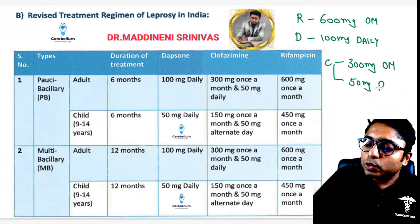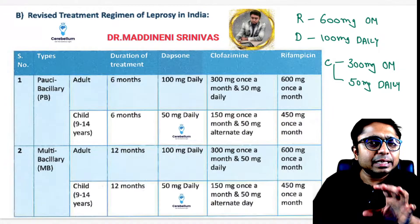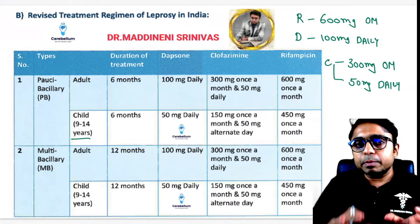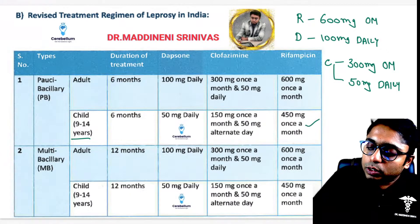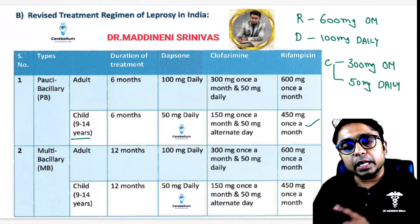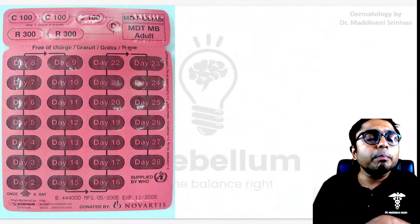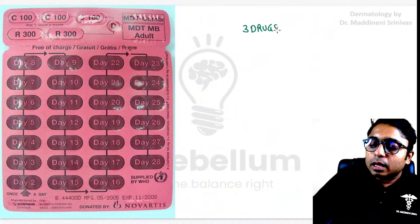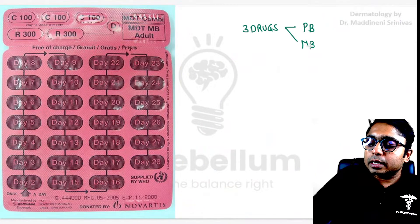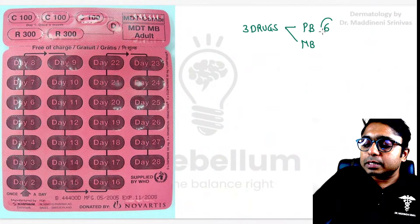That dosing is for adults. In children aged 9 to 14 years, remember half of the adult doses, except for Rifampicin where the dose is 450 mg once a month. This treatment regimen comes in a maroon-colored packet containing all three drugs, used for both paucibacillary and multibacillary patients. The only difference is the duration: six months for paucibacillary and twelve months for multibacillary.